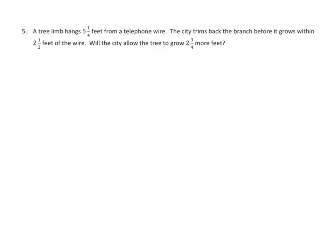Now we're going to go on to some word problems, directly from your homework. A tree limb hangs 5 and 1 fourth feet from a telephone wire. The city trims back the branch before it grows within 2 and 1 half feet of the wire. So when we're done, we're going to have to compare our answer with 2 and 1 half.